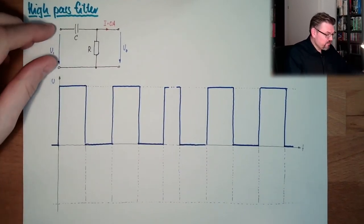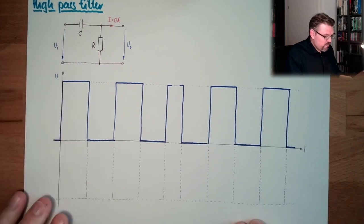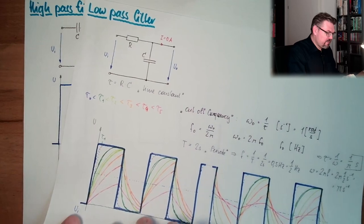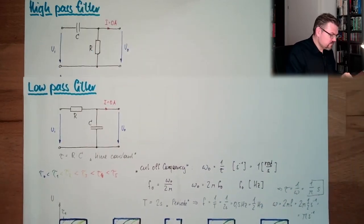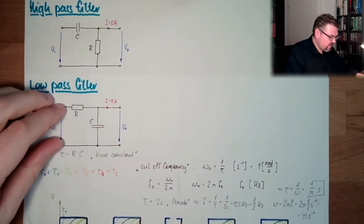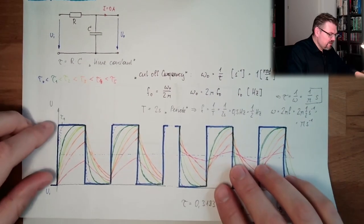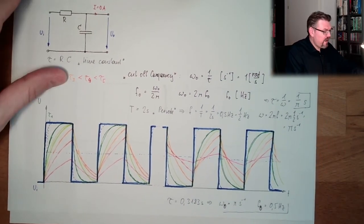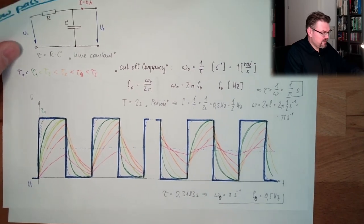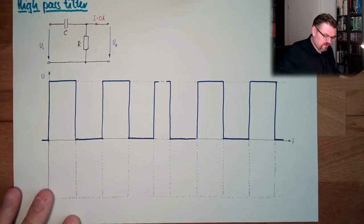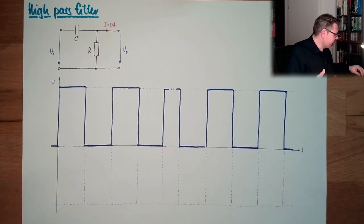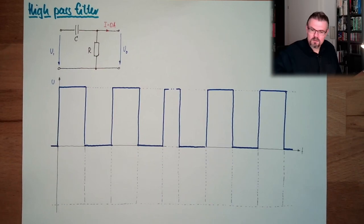We have again an input voltage, drawn exactly like last time. Remember, last time it looked like that — this was the low pass filter, and this was the high pass filter. Now let's see what we see at the high pass filter. Again, I am using one element, one tau.